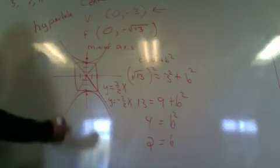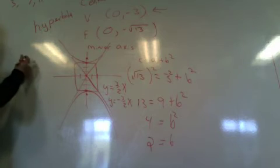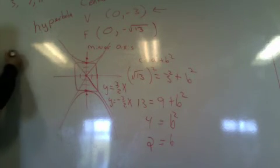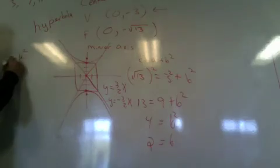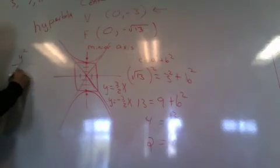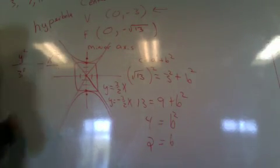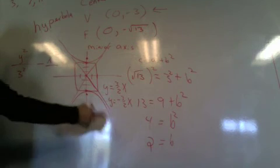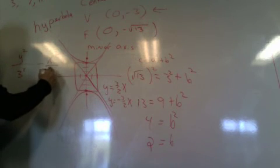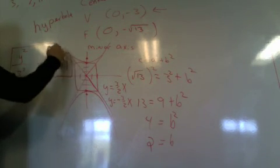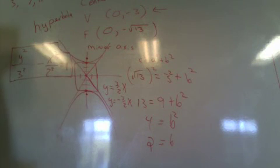So the equation then: the major axis comes first, which is the Y-axis. So we have Y squared over 3 squared minus X squared over 2 squared equals 1. So there's our equation.